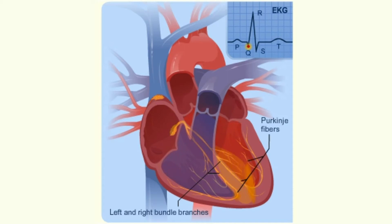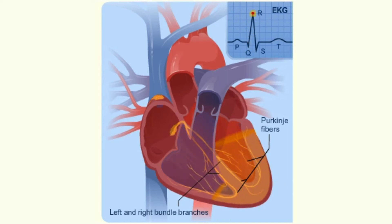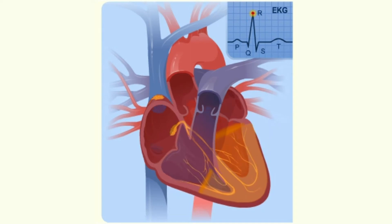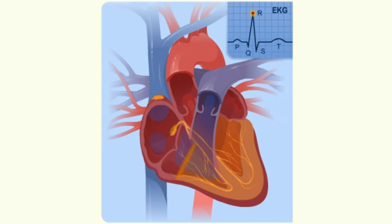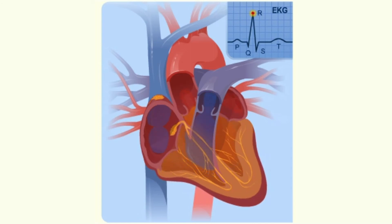The signal leaves the left and right bundle branches through the Purkinje fibers that connect directly to the cells in the walls of your heart's ventricles. The signal spreads quickly across your heart's ventricles. As the signal spreads across the cells of the ventricle walls, both ventricles contract, but not at exactly the same moment.